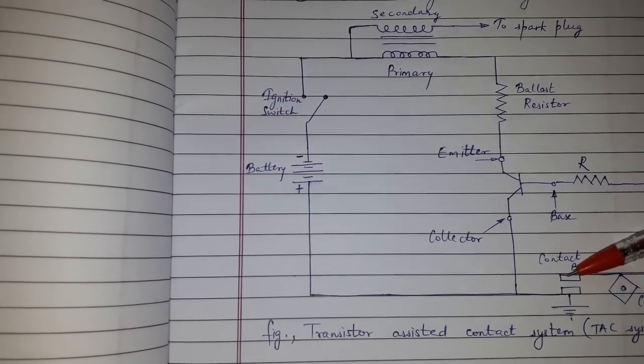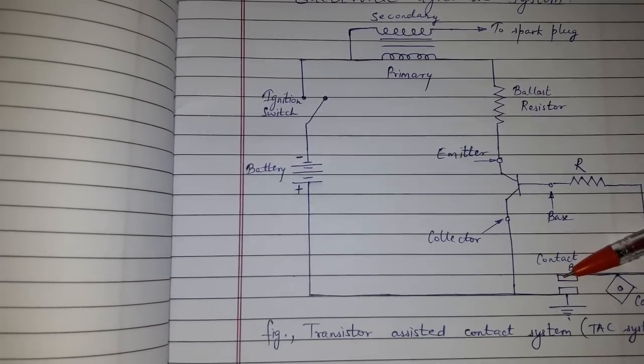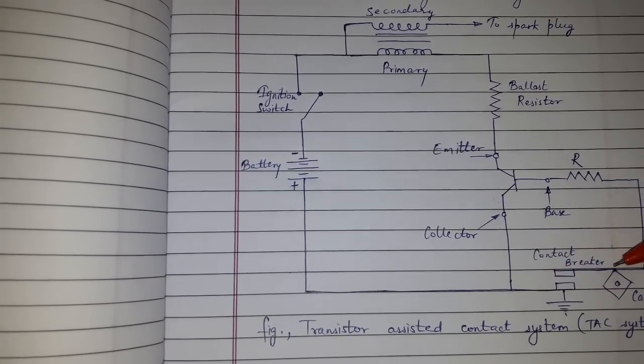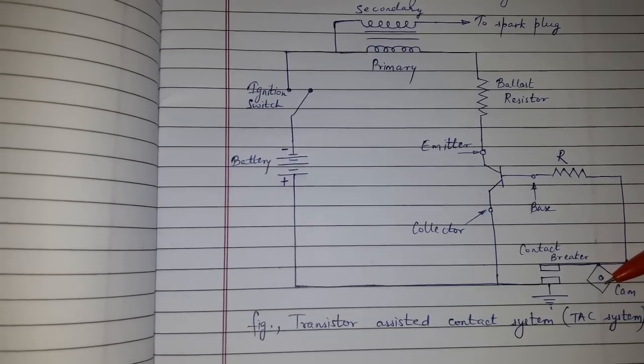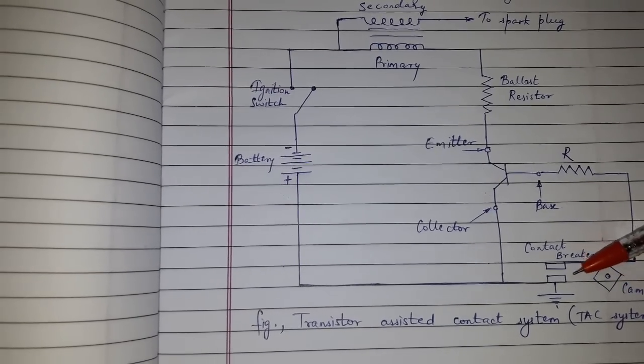The contact breaker makes or breaks the circuit. The contact point is operated by cam, which causes the breaker point to open and close.